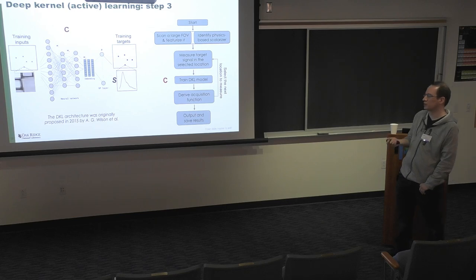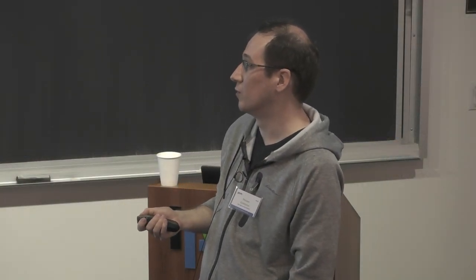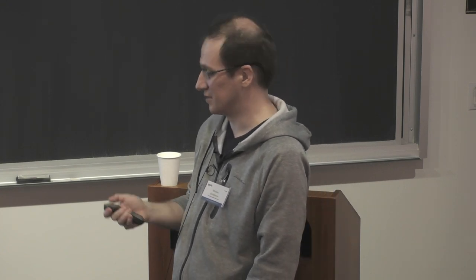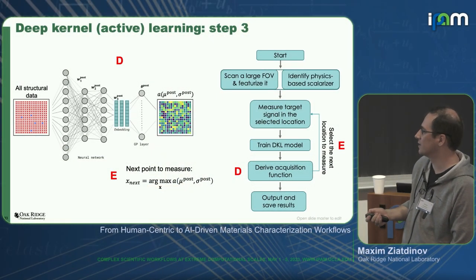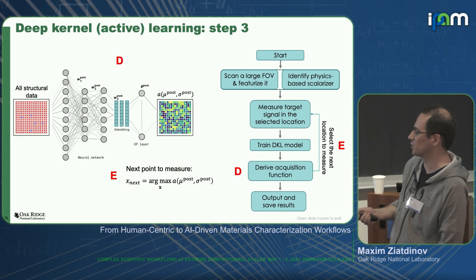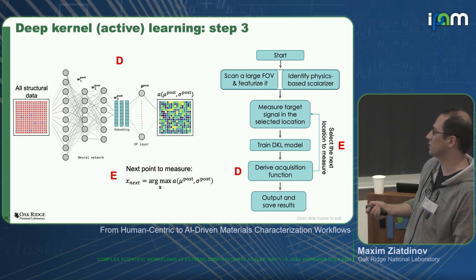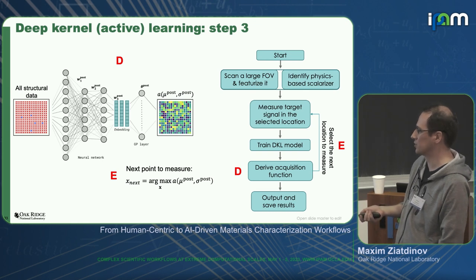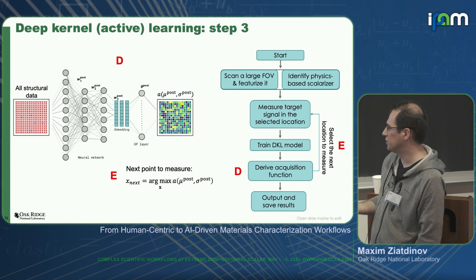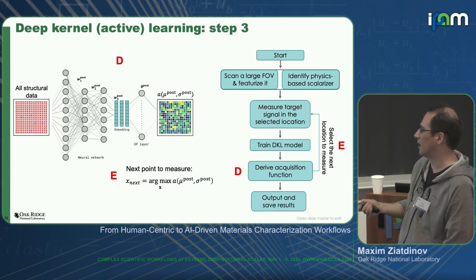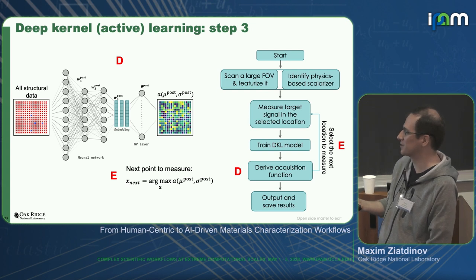There are other techniques — neural processes, which is something similar, and Bayesian neural nets, but they tend to be pretty slow. Of all the techniques I tried, deep kernel learning is not perfect, but it produces results. You train it and apply it to predict the property of interest at all points you haven't yet measured. You then take your predictive mean and associated uncertainty and combine them into an acquisition function, something like upper confidence bound — a linear combination of the two — or more advanced versions like expected improvement. You use it to select the next measurement point: roughly, you select the point with the highest likelihood of maximizing the particular behavior of interest.